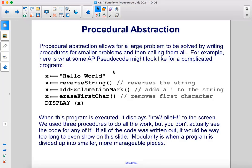here is what some AP pseudocode might look like for a complicated program. x is set to hello world. Then we're going to reverse string, add exclamation mark, erase first char, display x.